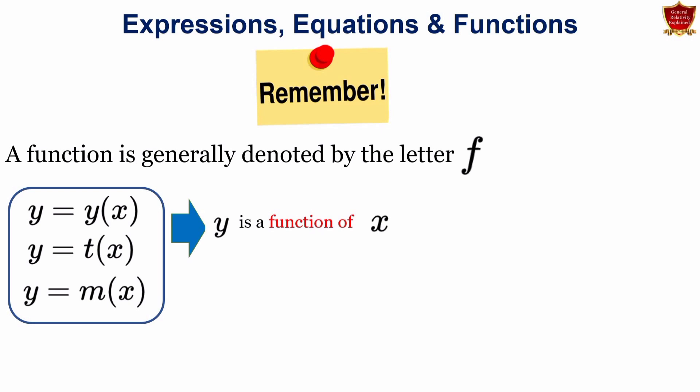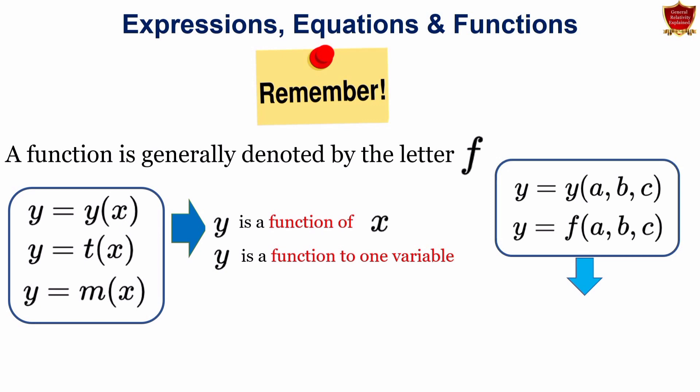In this example, because the value of y only depends on x, we say that y is a function of one variable. Alternately, if we get values like this, say y equals to y of a, b, c, etc. is a function of several variables. So y is a function of a, b, and c. In these examples, we say y is a function of three variables.